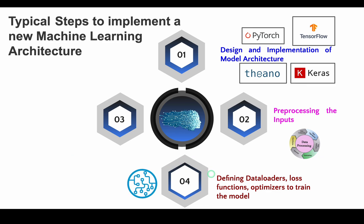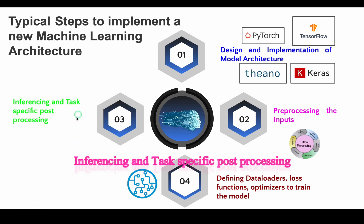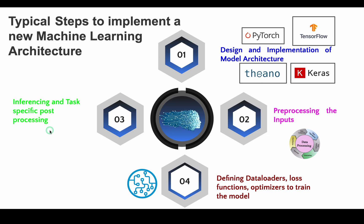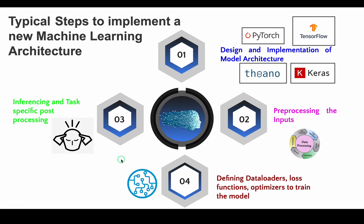Once the model is trained, inference or predictions on the test data is carried out on the trained model. After that, task-specific post-processing is applied to the predictions to enhance accuracy or the evaluation metric that we are using for that particular problem statement.